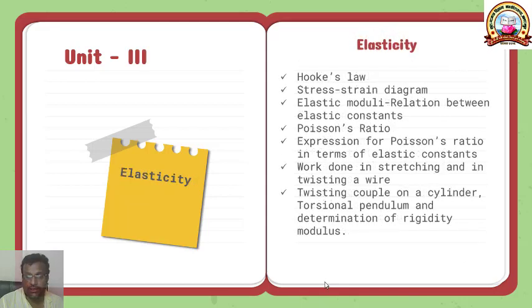In the third unit, we see properties of matter. First properties of matter, we will see elasticity. The same unit starts with Hooke's law, then follows stress and strain, then elastic moduli, relation between elastic constants, Poisson's ratio, expression for Poisson's ratio in terms of elastic constants, then work done in stretching and in twisting wire, twisting couple of a cylindrical cylinder, torsion pendulum and determination of rigidity modulus.